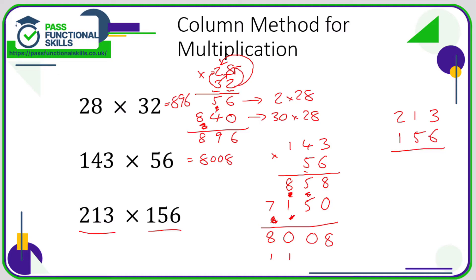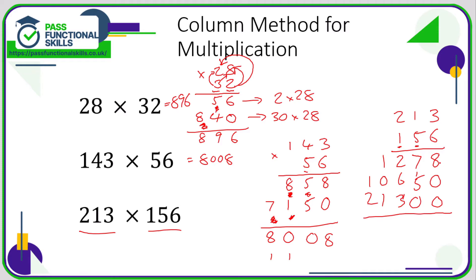6 times 3 is 18 — 8 carry 1. 6 times 1 is 6, plus 1 is 7. 6 times 2 is 12. Put in the zero for the 5 of 50: 5 times 3 is 15 — 5 carry 1. 5 times 1 is 5, plus 1 is 6. 5 times 2 is 10. Now two zeros for the 1 of 100: 1 times 3 is 3, 1 times 1 is 1, 1 times 2 is 2. Adding up three lines: 8+0+0=8, 7+5=12 carry 1, 2+6+3+1=12 carry 1, 1+0+1+1=3, 1+2=3. So the answer is 33,228.